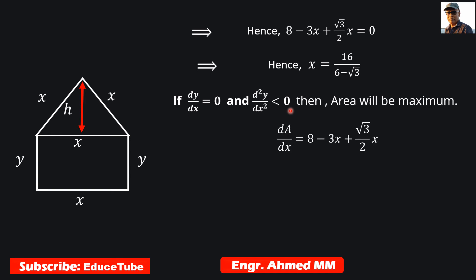This is the first derivative, so the second derivative will be this. And look at the second derivative, we got the value which is negative, so it is satisfying this.